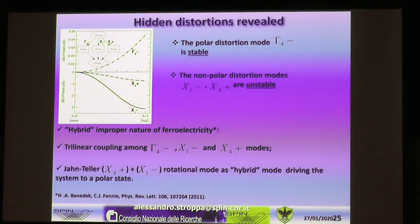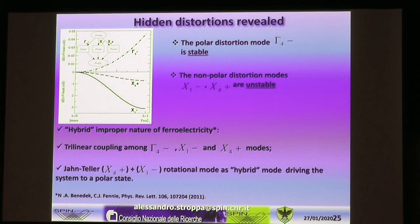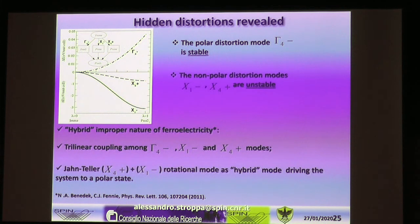Two of the distortions are non-polar — keeping inversion symmetry — but they give rise to an induced polar distortion: essentially a hybrid improper mechanism. Analyzing the energy variation for each mode independently, we find the two non-polar modes are unstable and lower the symmetry of the system. They hybridize — hence 'hybrid' mode — and as a byproduct produce a polar mode which is stable on its own and cannot alone lower the symmetry or energy. This linear coupling is an ingredient for the origin of ferroelectricity.